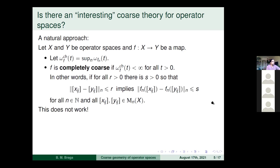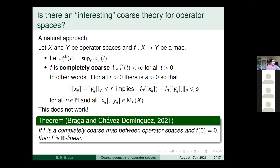But this fails miserably. By a result of Alejandro Chávez-Domínguez, if you start with a map between operator spaces which is completely coarse — so a priori keeping no track of the linear structure — the map is automatically at least R-linear, up to a translation. This is not a good notion: you start trying to do non-linear geometry and conclude that your morphism is automatically R-linear. So that's a big fail.